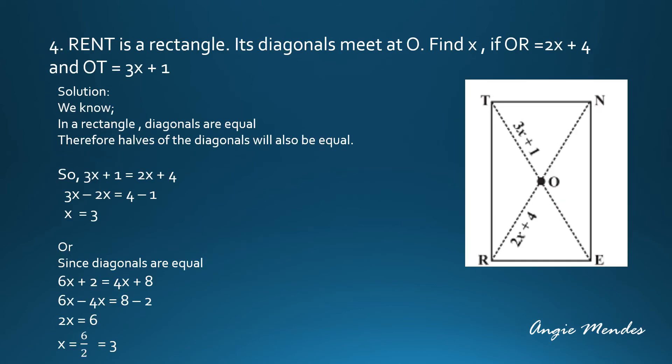Let us take another example of a rectangle. Here we have R, E, N, T is a rectangle. Its diagonals meet at O. Find X if OR is equal to 2X plus 4 and OT is equal to 3X plus 1. Now we know that in a rectangle, the diagonals are of equal length. Therefore, the halves of the diagonals will also be equal. So keeping this property in mind, we are going to take 3X plus 1 is equal to 2X plus 4.